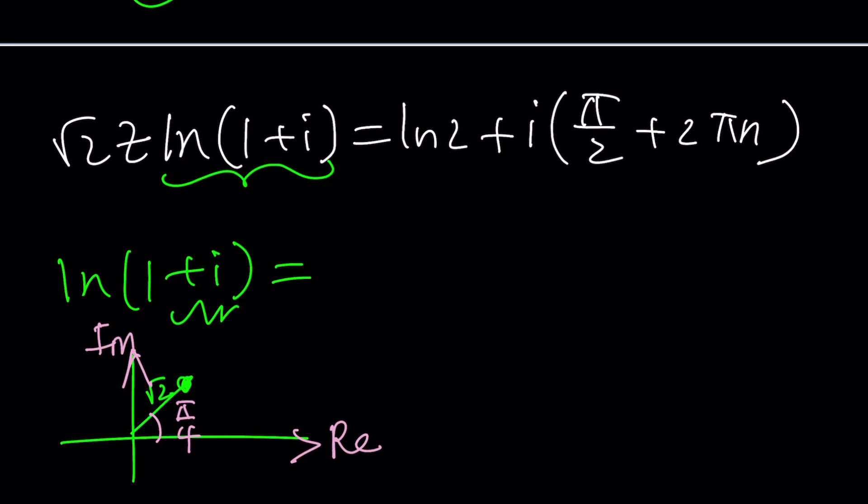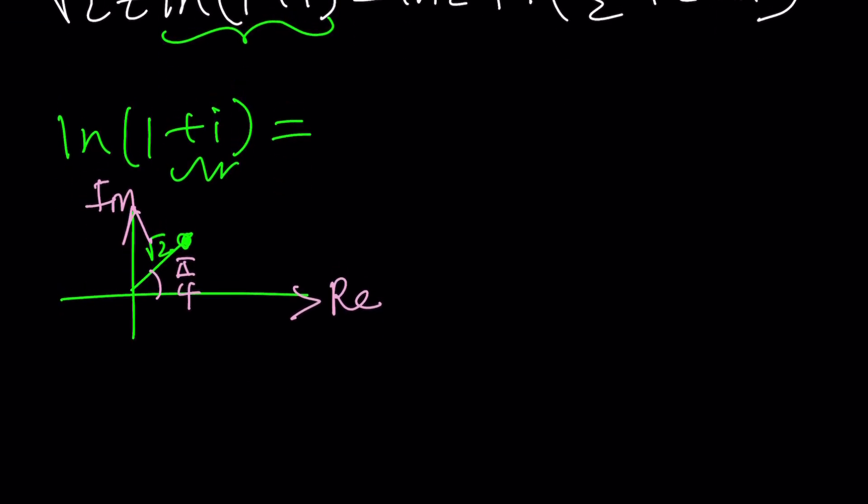1 plus i is right here, root 2 units away from 0 and this is pi over 4 but again that is the principal argument. Check out my lecture videos if you're new to complex numbers because I talk about all the basics including plotting complex numbers, writing them in polar form and so much more. So ln 1 plus i is ln root 2 which is the modulus plus i times the argument which is pi over 4 plus 2 pi k. We're going to use another integer here because k and n don't have to be the same.